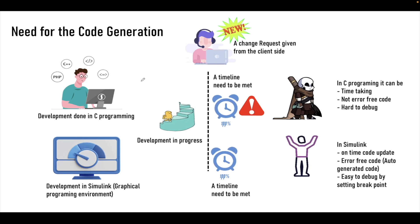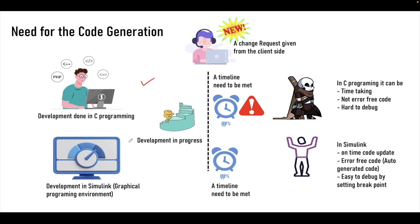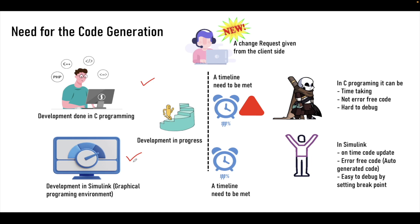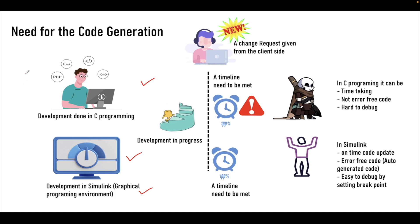Suppose there is a developer who is writing C code and fixing all the errors that he thinks could be possible bugs, developing the C code for a product's software. There is another team developing the same thing in the form of model-based development. They are using the MATLAB Simulink toolchain and developing the same behavior in a graphical programming environment. This is the entire development process that two teams are doing — team 1 and team 2.